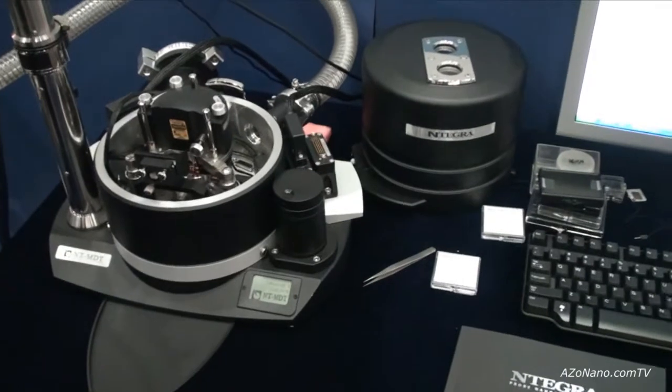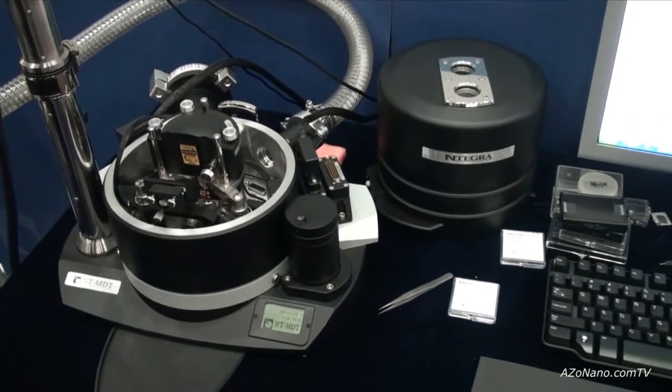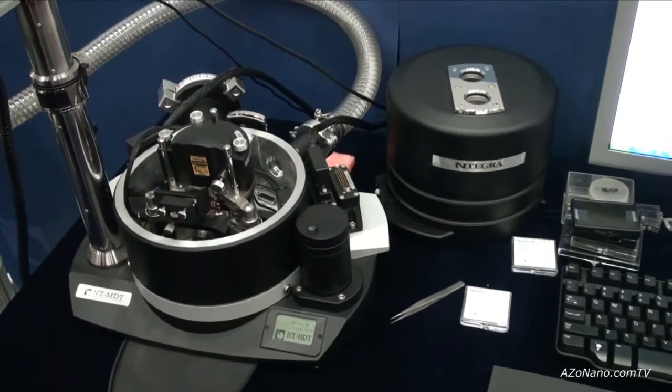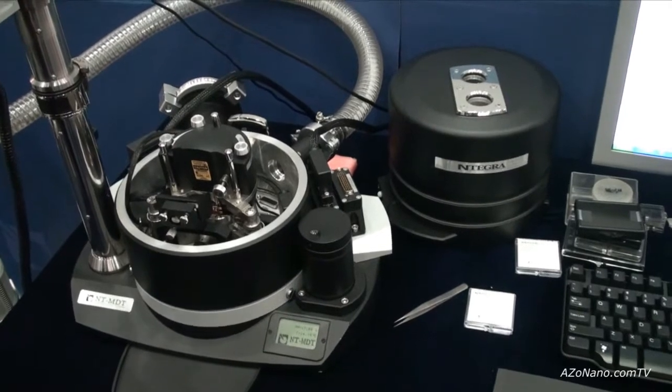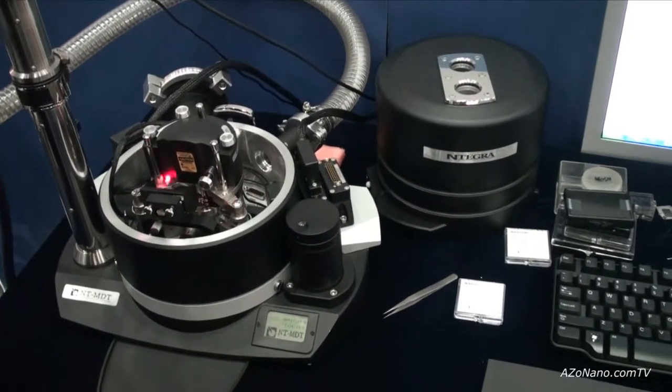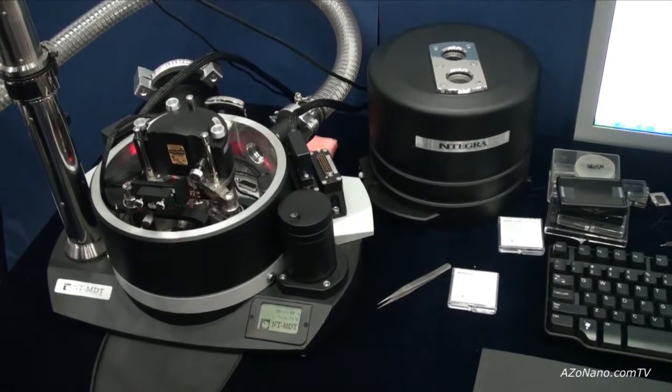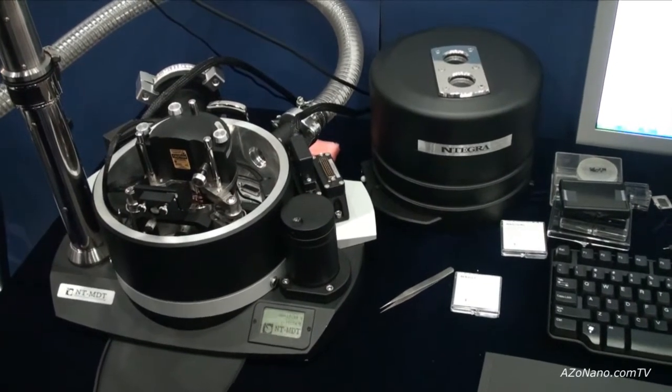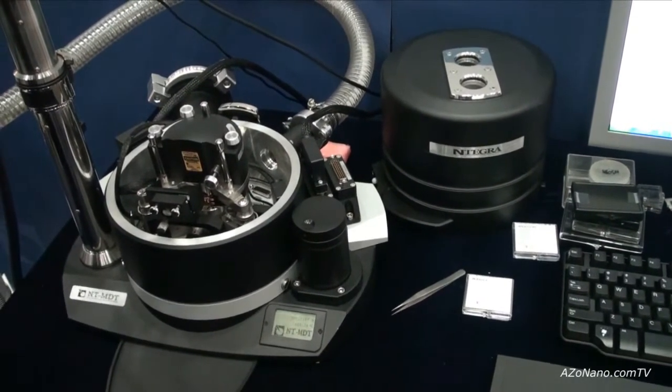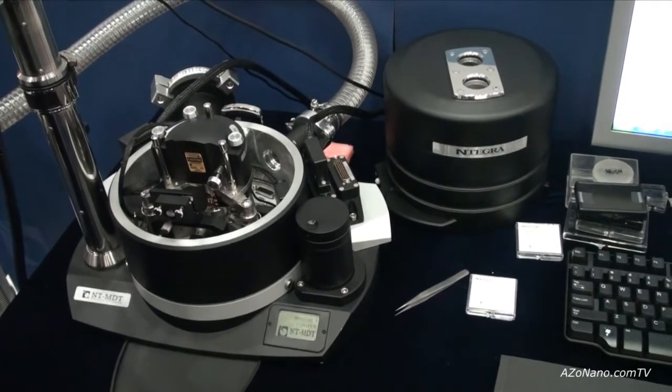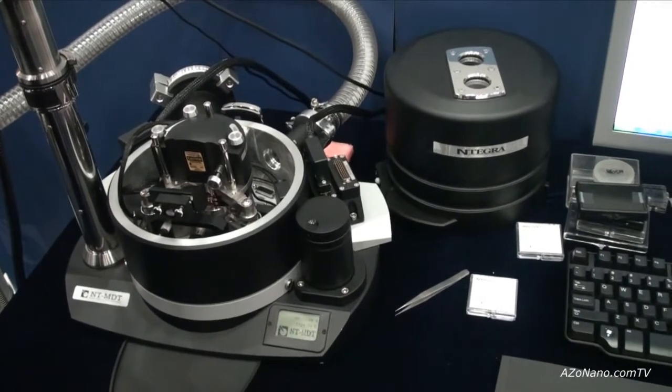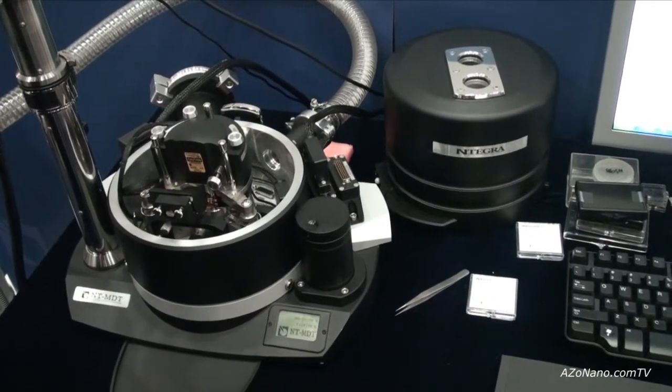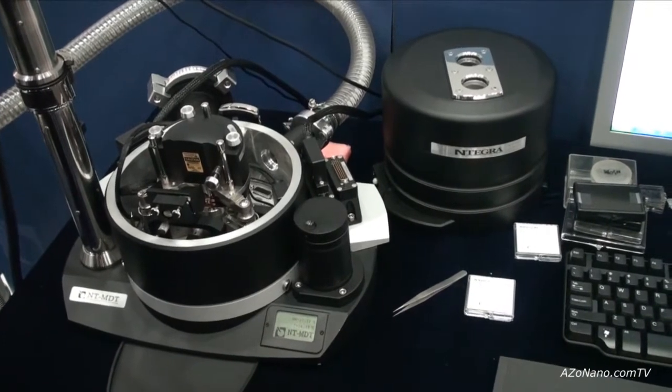In the case of high resolution measurements, you may need another design which we have by changing this triangle to the so-called thermal head. This thermal head allows to get unique low drift with a value less than 10 nm per 1 degree of heat.